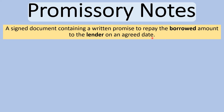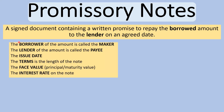A promissory note typically has these common components: the borrower, called the maker — the person making the note; the lender, also called the payee — who the maker will pay; an issue date; the terms (how long the note is issued for — 30, 60, 90 days, a year, two years, etc.); the face value, whether it's a principal value or a maturity value (interest-bearing or non-interest-bearing); and the interest rate.